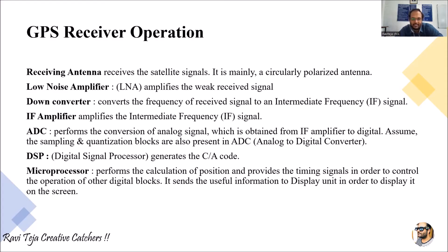Next comes the ADC — analog to digital converter. As the name indicates, it performs the conversion of the analog signal obtained from the IF amplifier into a digital signal. All processes including sampling and quantization are done in the analog to digital conversion process.